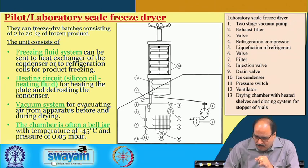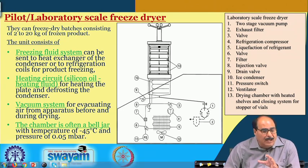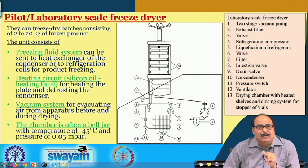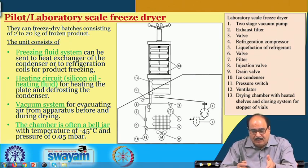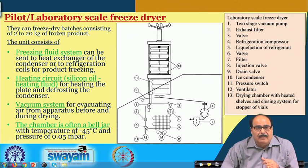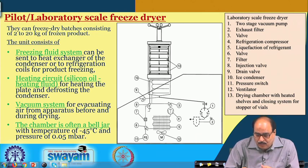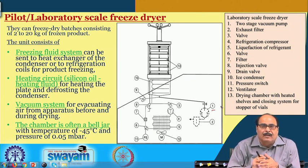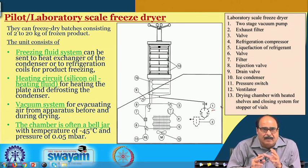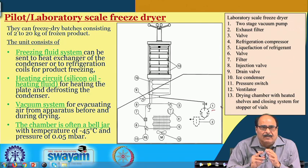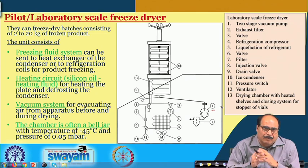In this figure, we have shown the schematic of the laboratory scale or pilot scale freeze dryer. The different components are highlighted and marked, including a 2-stage vacuum pump, exhaust filter, valve, and other components you can read from the slide. The pilot scale or laboratory scale freeze dryers have a capacity of about 2 to 20 kg of frozen products.